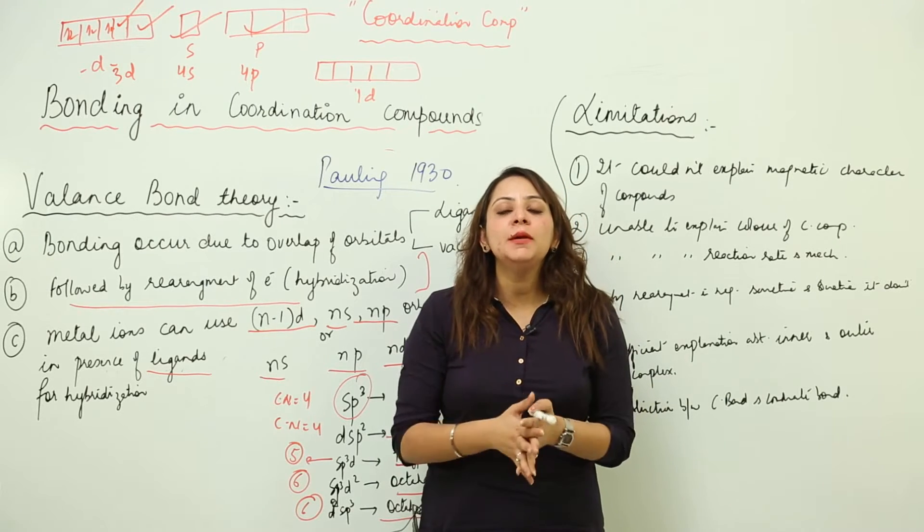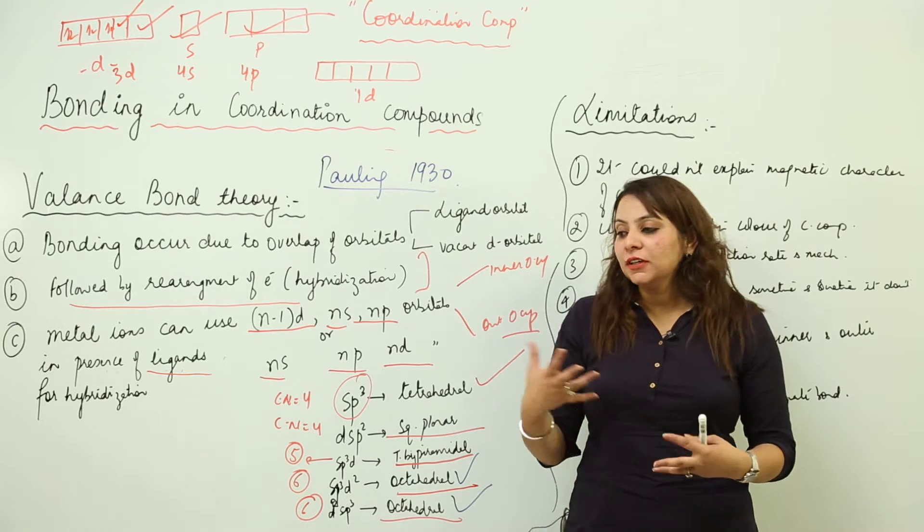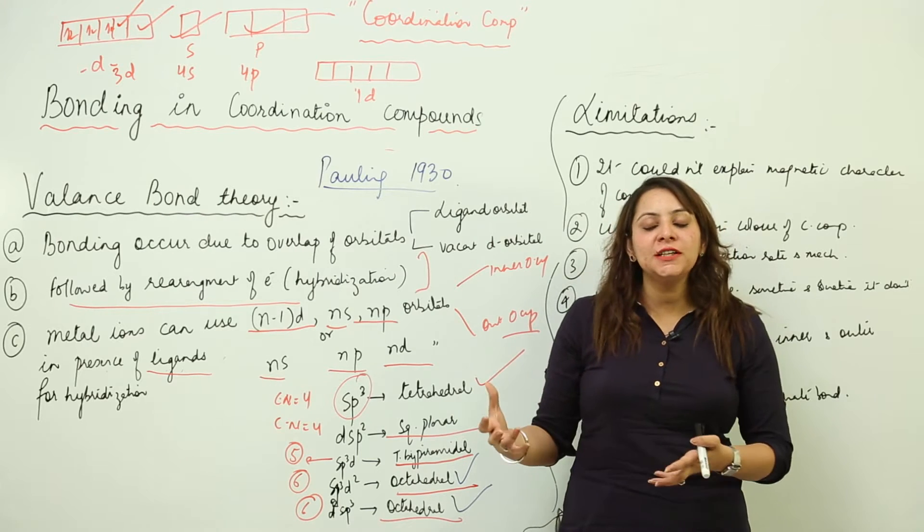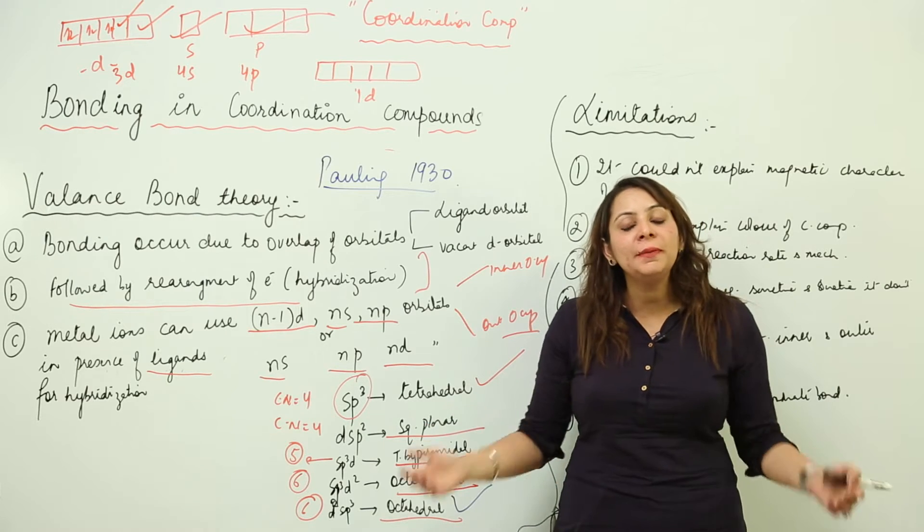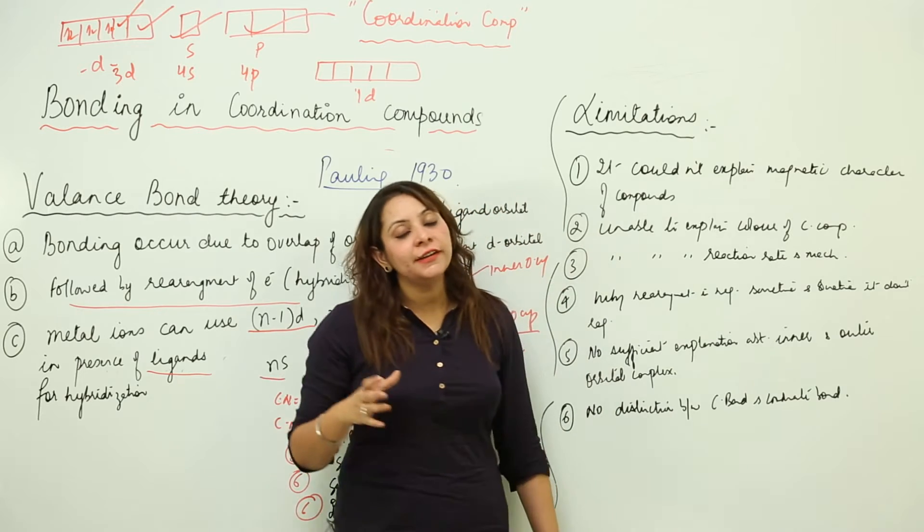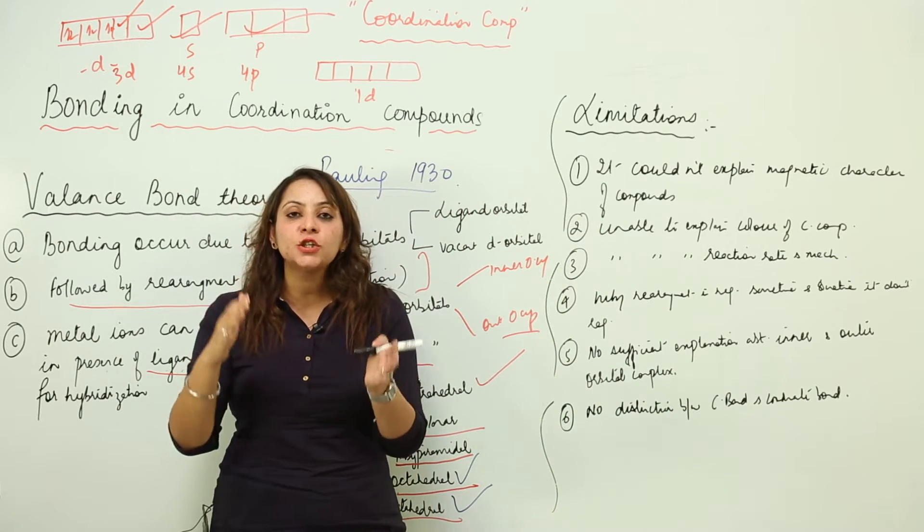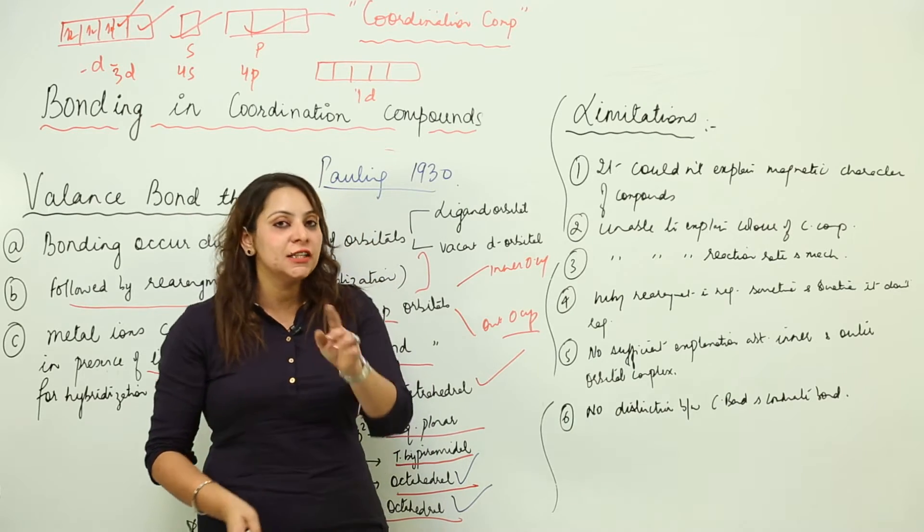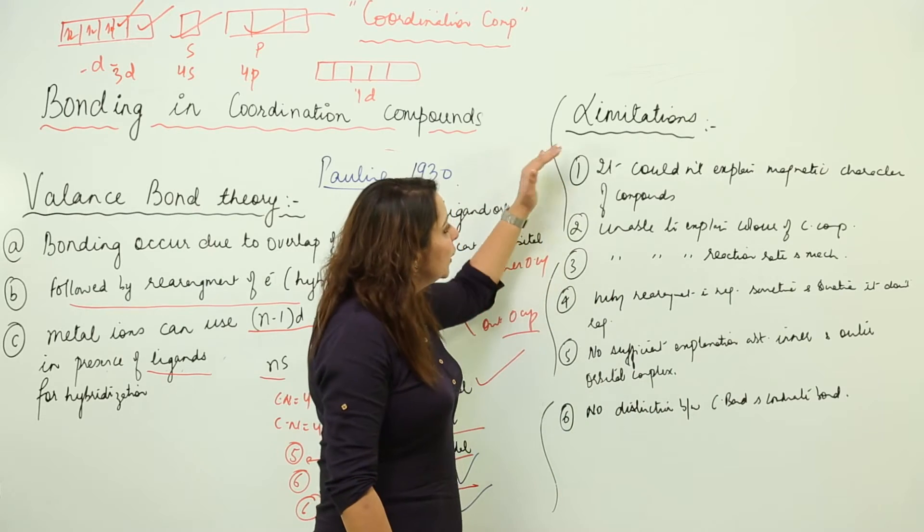Now there are many limitations to the Valence Bond Theory. As you know, when experts try to give certain theories, there are many people sitting around to criticize it. Likewise, there are certain criticized points of the Valence Bond Theory which were actually the limitations. Just look at the board to see what those points were.